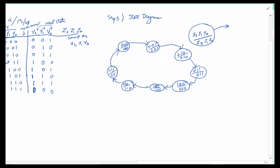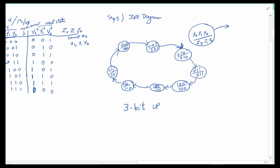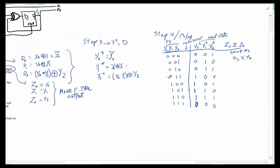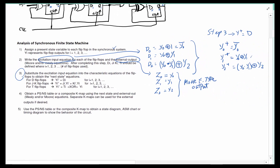As you can see, it counts 1, 2, 3, 4, 5, 6, 7, and back to 0. The state diagram is usually complete and descriptive enough that people can see what state they're in and where they go next, but this is such a clear-cut situation that we have a name for it: this is a 3-bit up binary counter. So we were able to walk through the five steps of analysis and figure out what this circuit does.